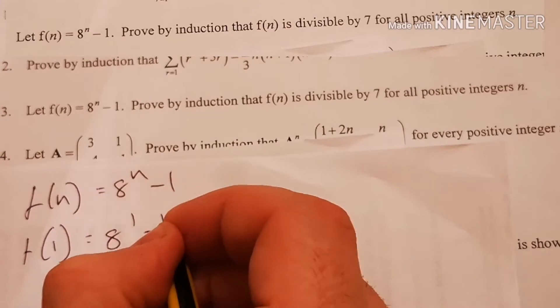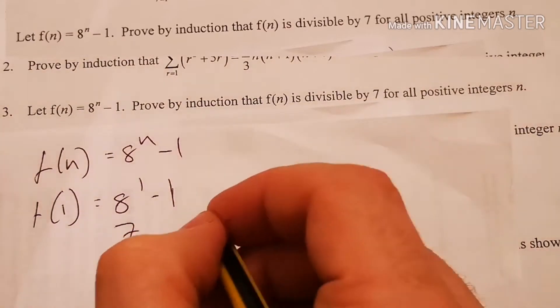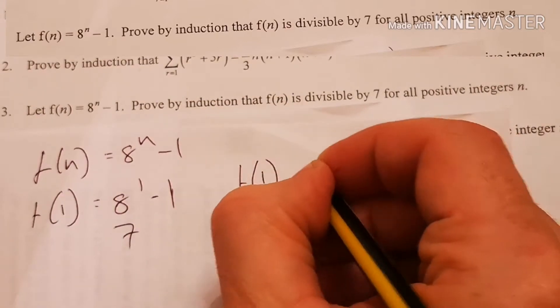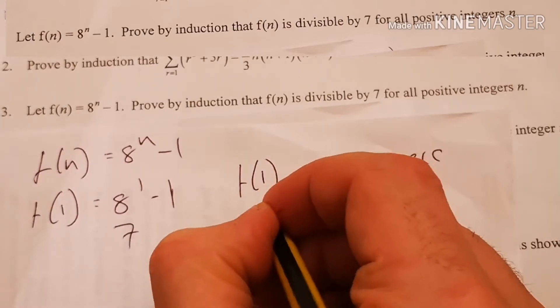So 8 to the power of 1 minus 1 equals 7, which is divisible by 7. So I'm going to say f(1) is divisible by 7.